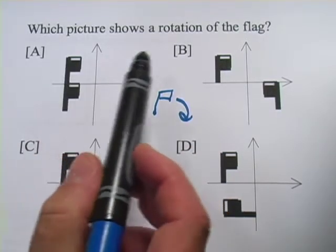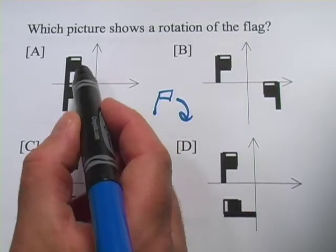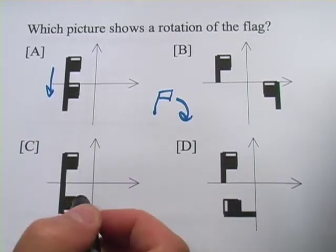So the question here is, which picture shows a rotation of a flag? And in A, you've got this flag up here, and it's clearly just been moved down. So that's a simple translation, not a rotation.